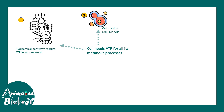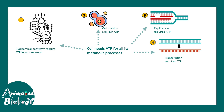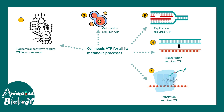Any cells that are dividing — for example stem cells or many skin cells — require a huge amount of ATP to divide. Processes like DNA replication, which is a prerequisite for division, gene activation, transcription, and translation all require ATP at specific steps.